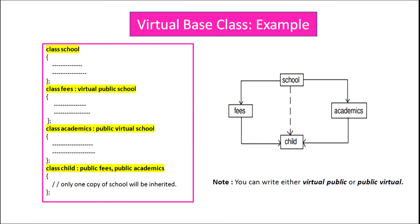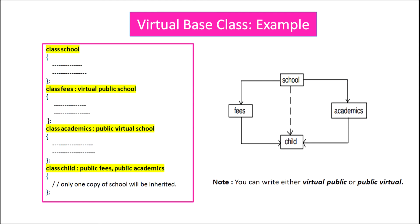Here is how to implement it in C++: first, create class School; then create class Fees which inherits publicly from School, writing the keyword virtual before it to declare it as a virtual base class. Then create class Academics which also inherits publicly from School with the virtual keyword. Note that you can write either virtual public or public virtual — both are the same. Finally, create class Child inheriting Fees and Academics publicly. Since School is declared virtual, multiple copies of its members will not exist in class Child.